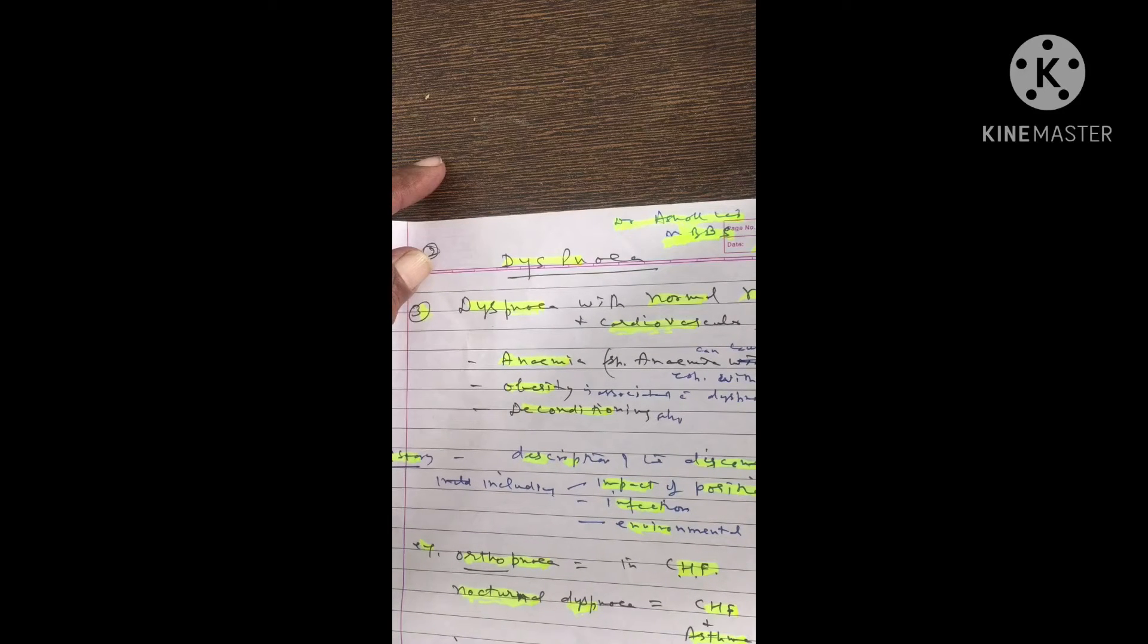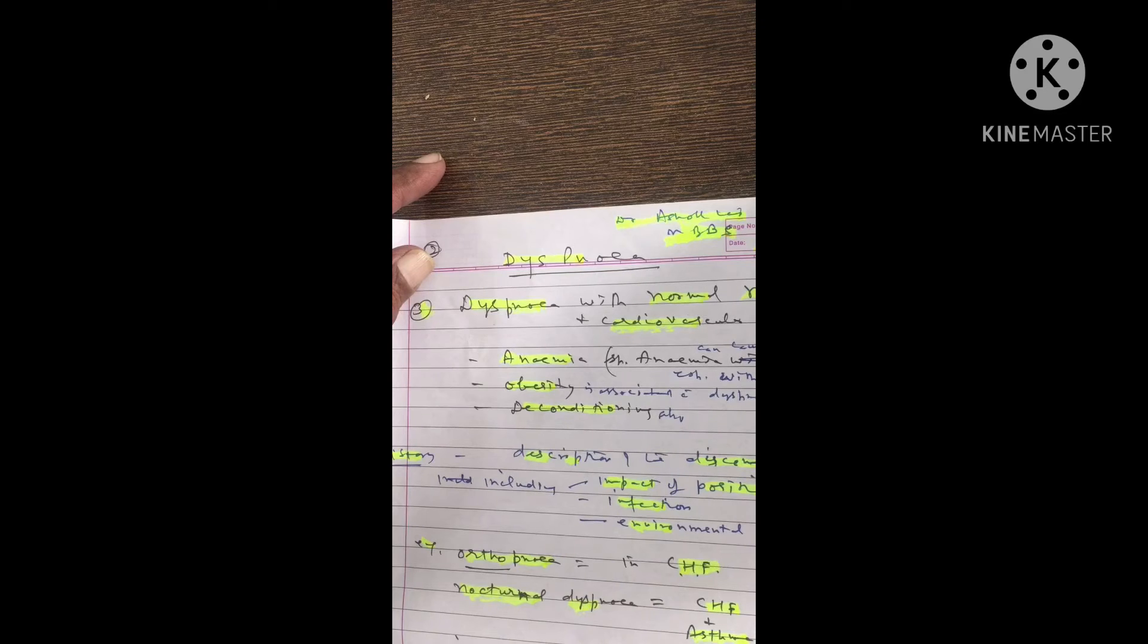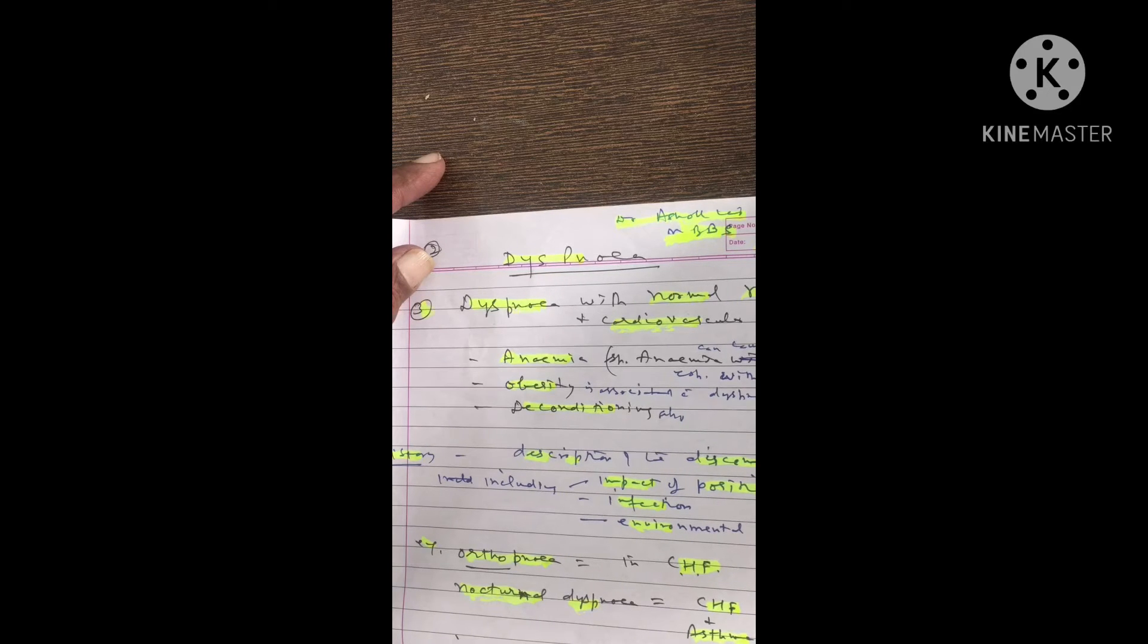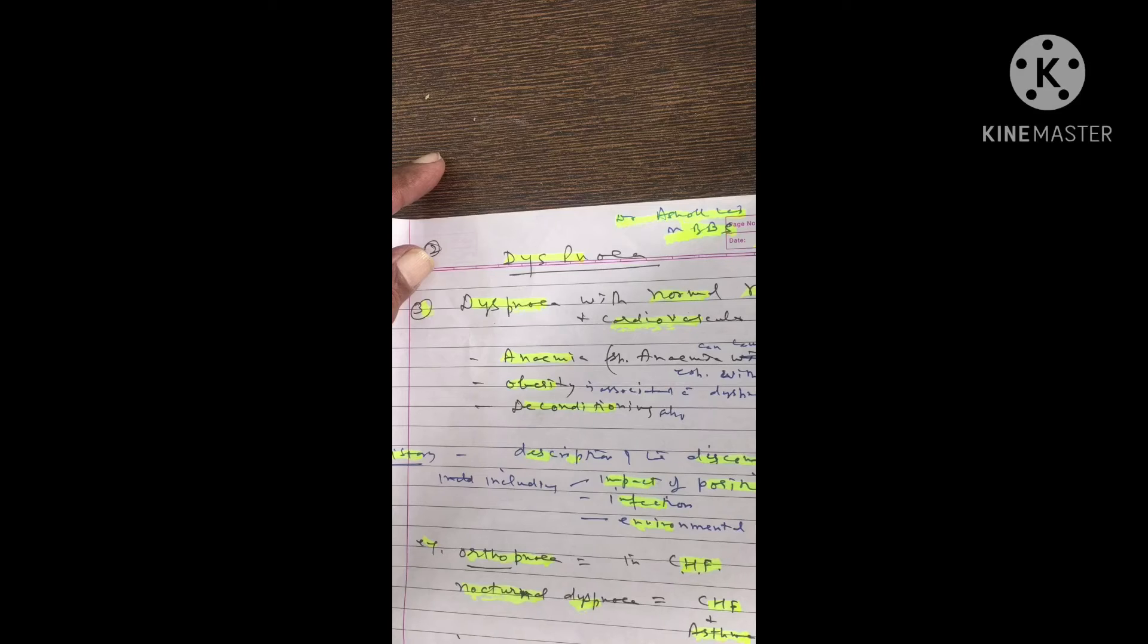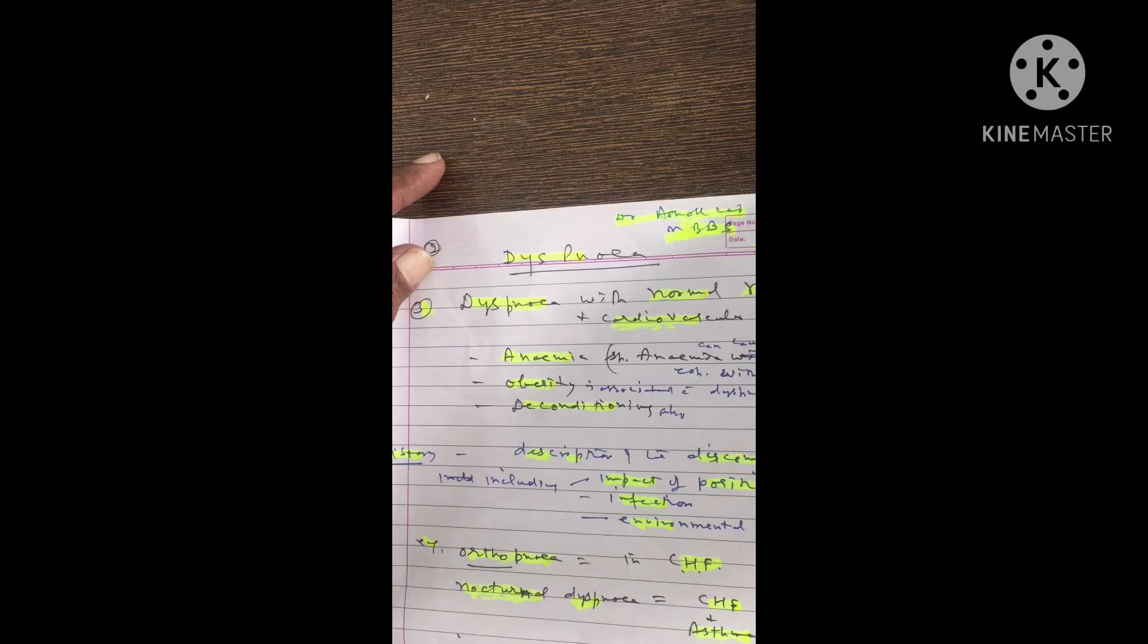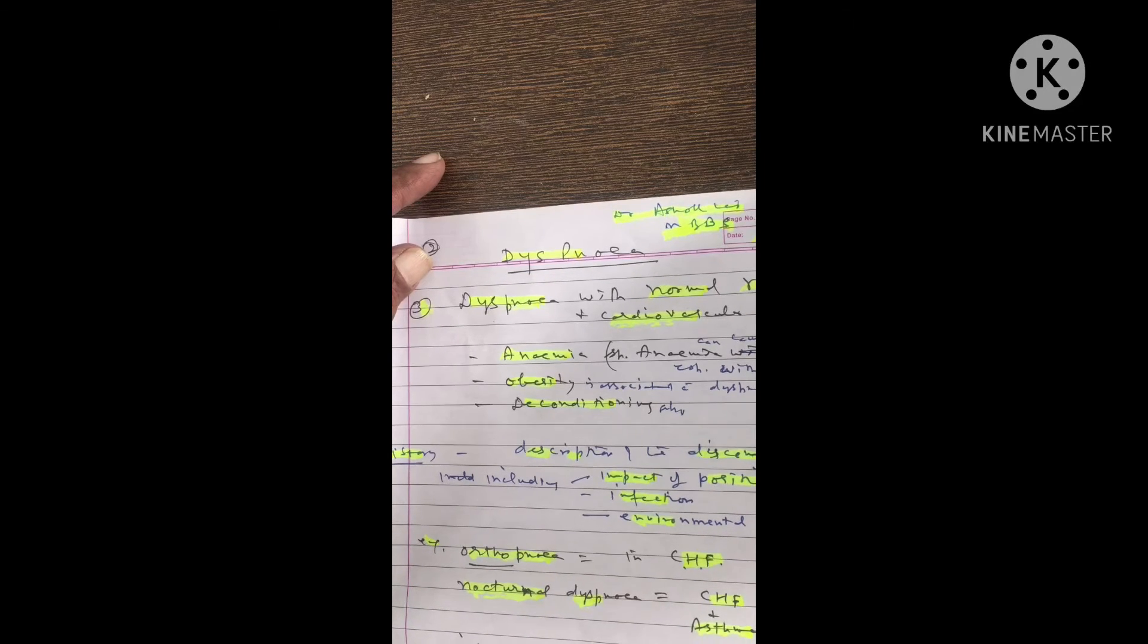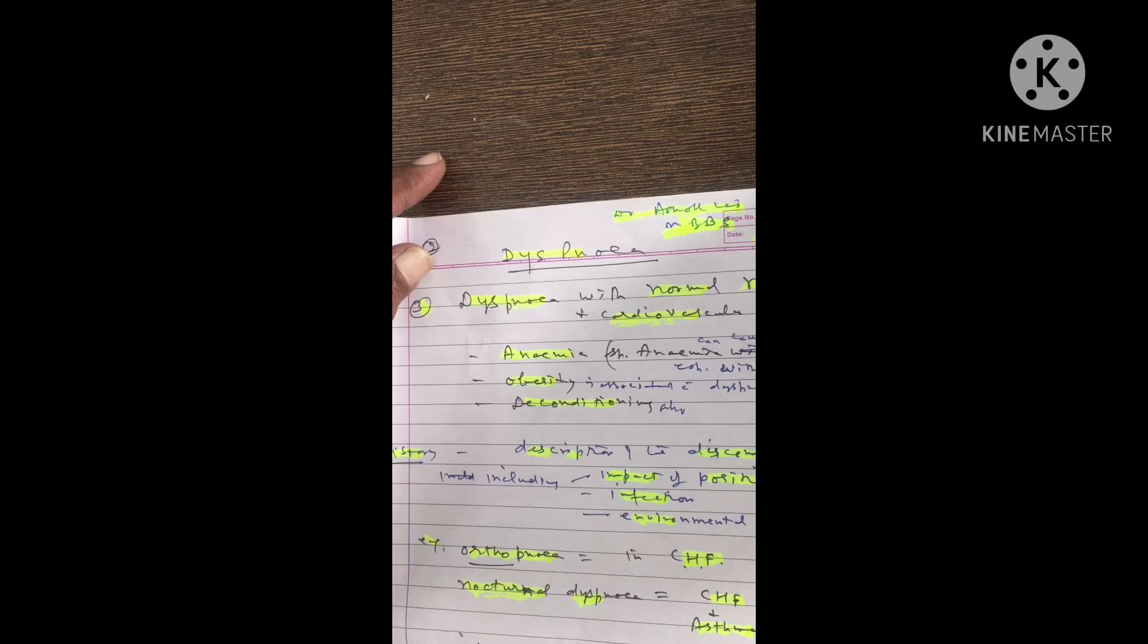History includes description of discomfort. The impact of position will affect dyspnea. Infection will also affect it, and environmental exposure will affect dyspnea. For example, orthopnea, where the patient will feel breathlessness or dyspnea while lying down, for example in CHF.